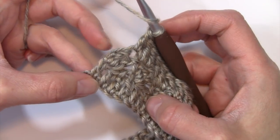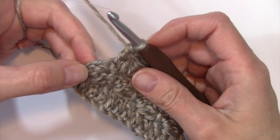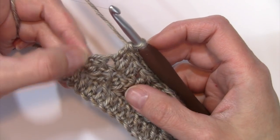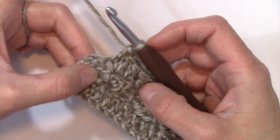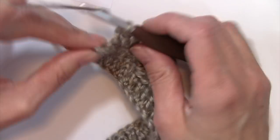Now when we get to the end of this row, we've been working double crochets in every stitch. Remember that chain one that we did at the beginning of this row previous. That counted as a stitch, and we need to work a double crochet in it.